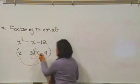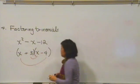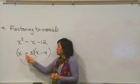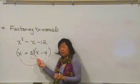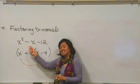If I make the 4 negative and the 3 positive, so I have negative 4x and positive 3x, if I were to combine those, I would get the negative 1x I need in the middle.